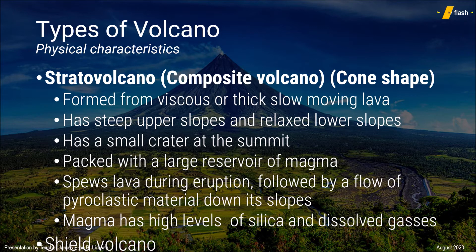When composite volcanoes explode, a significant area of the summit may collapse, which leaves a larger crater called a caldera. This happened during the eruption of Mount Pinatubo. Other examples of stratovolcano are Mount Mayon in Luzon, Mount Kilimanjaro in Africa, Mauna Loa in Hawaii, Mount Fujiyama in Japan, and Mount Vesuvius in Italy, which was infamous for destroying the ancient city of Pompeii.